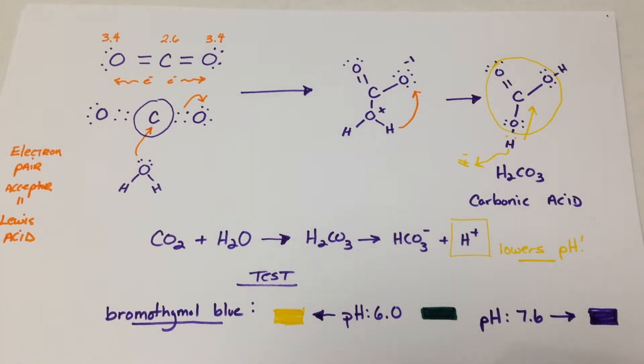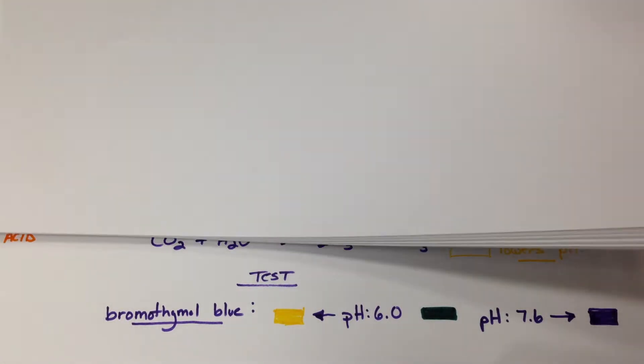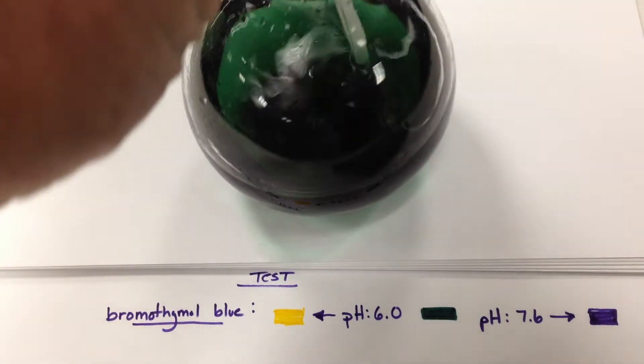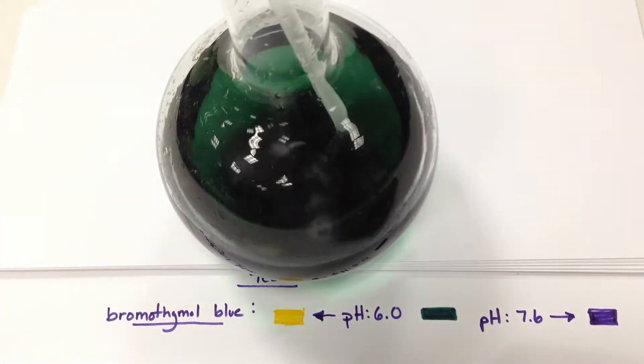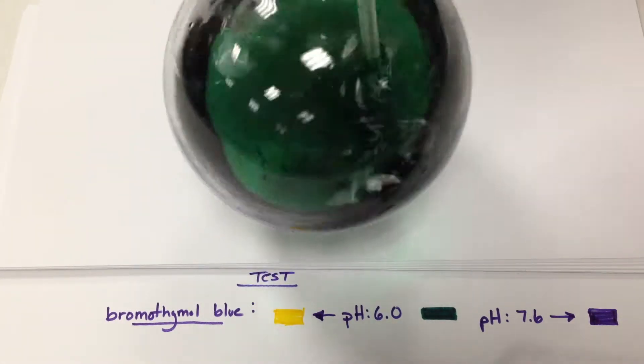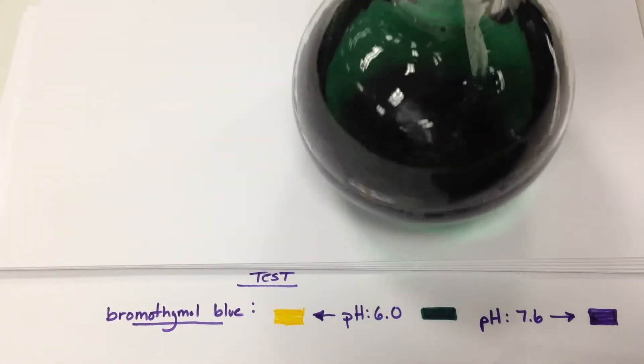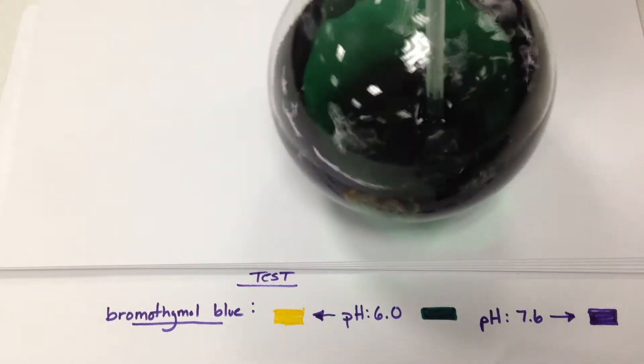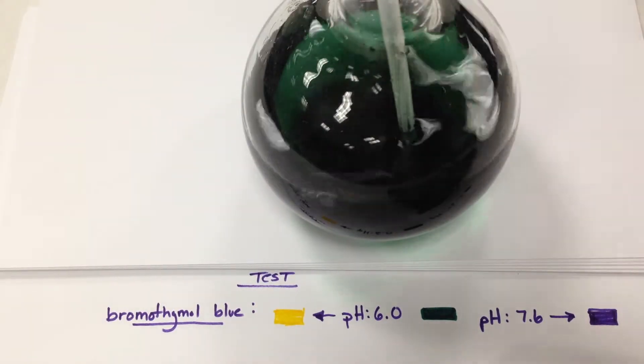So this is what I have here. So I have my flask with a tube, with basically a straw, and I'm going to blow in it. So I got this green color, green because I'm between 6 and 7. I'm using water that is buffered, so I'm just going to blow into it.